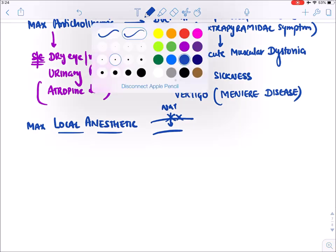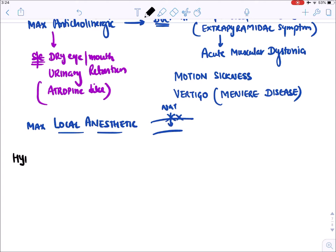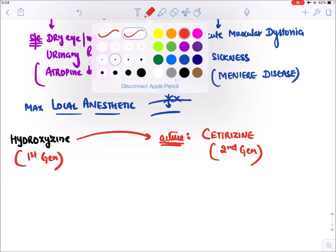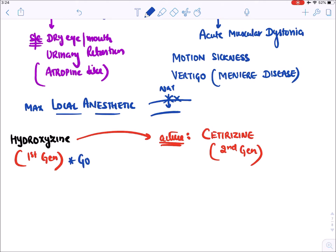Hydroxyzine is a prodrug whose active form is cetirizine — a second generation antihistaminic. That is why cetirizine is the only second generation antihistaminic with sedative effect (like its parent hydroxyzine). Hydroxyzine has very good anti-pruritic action and comes with the brand name Atarax.